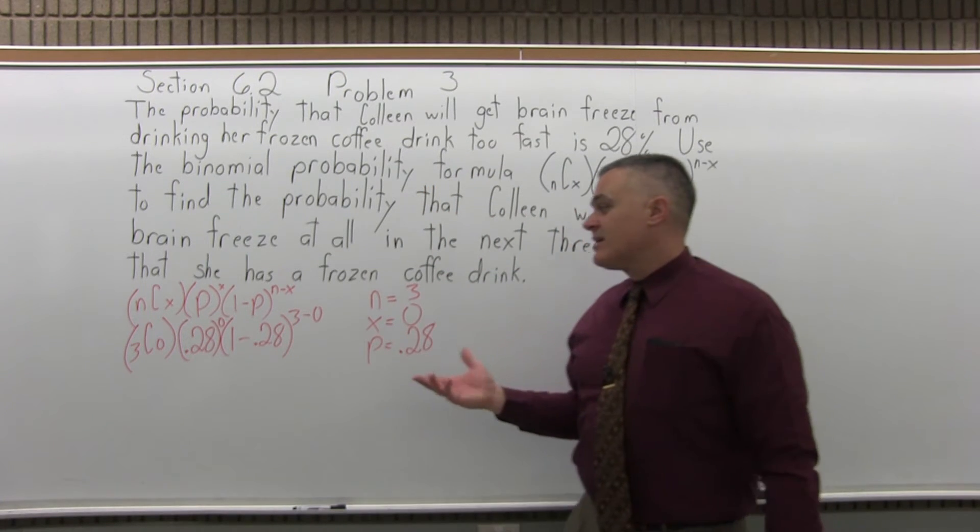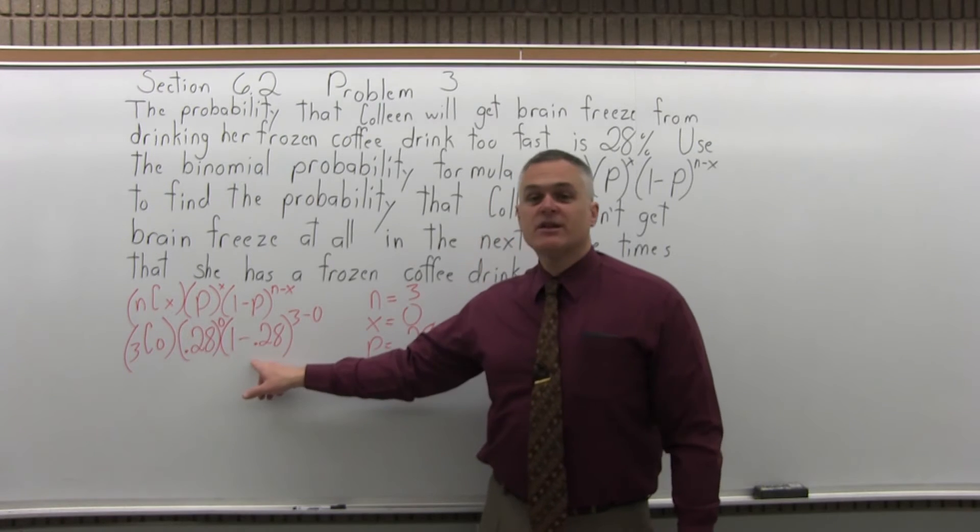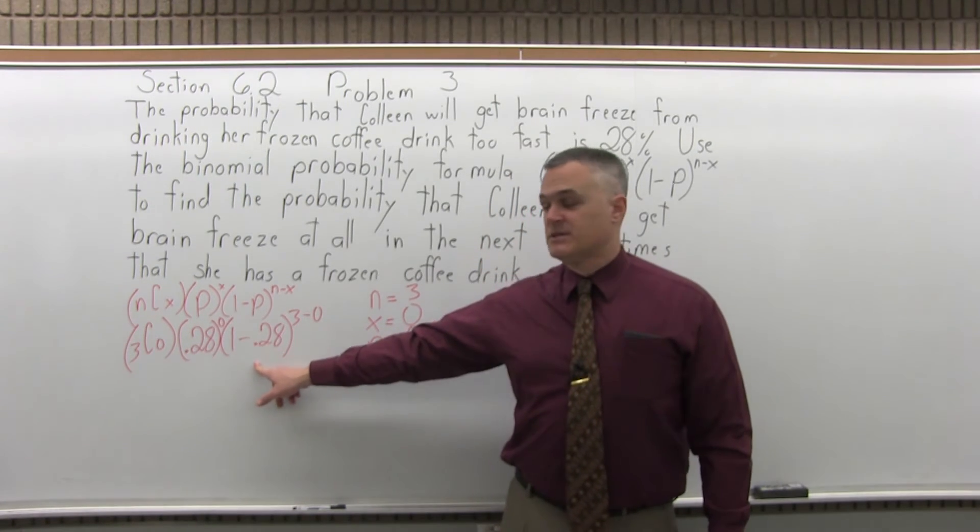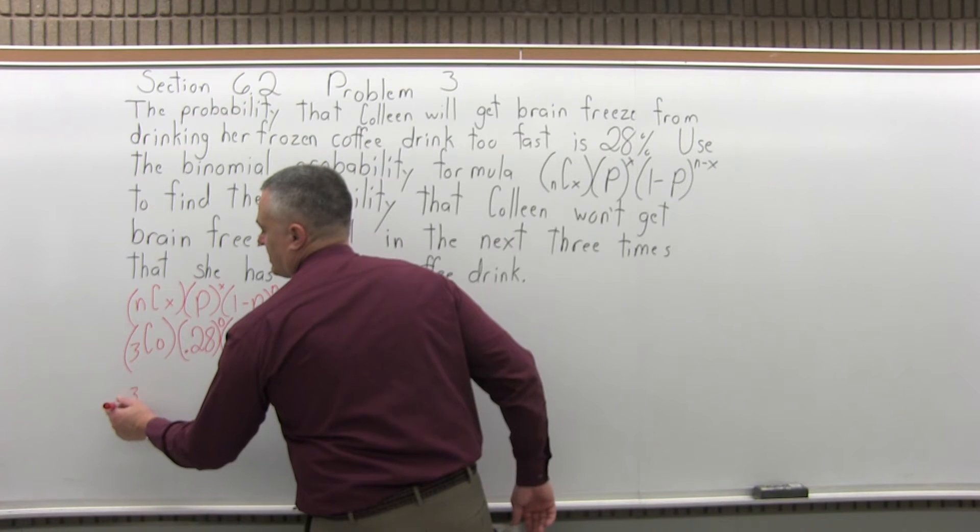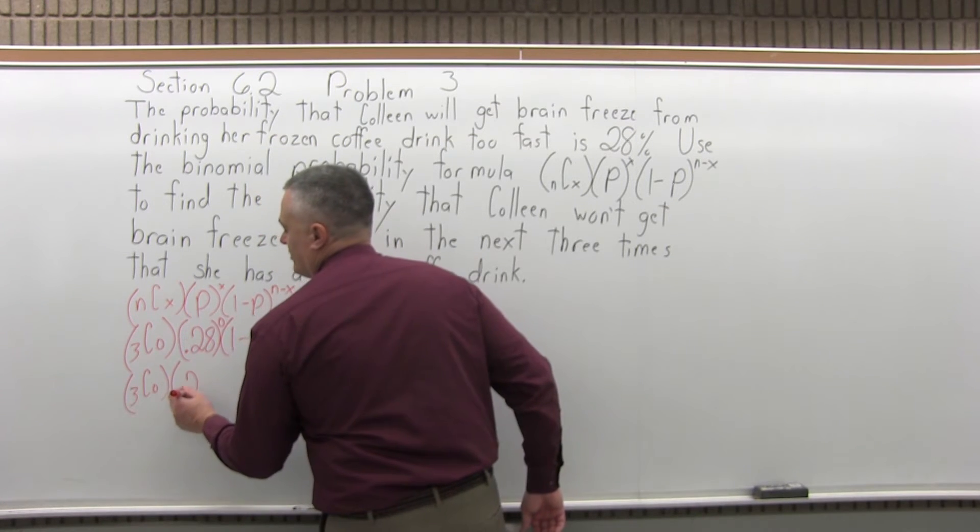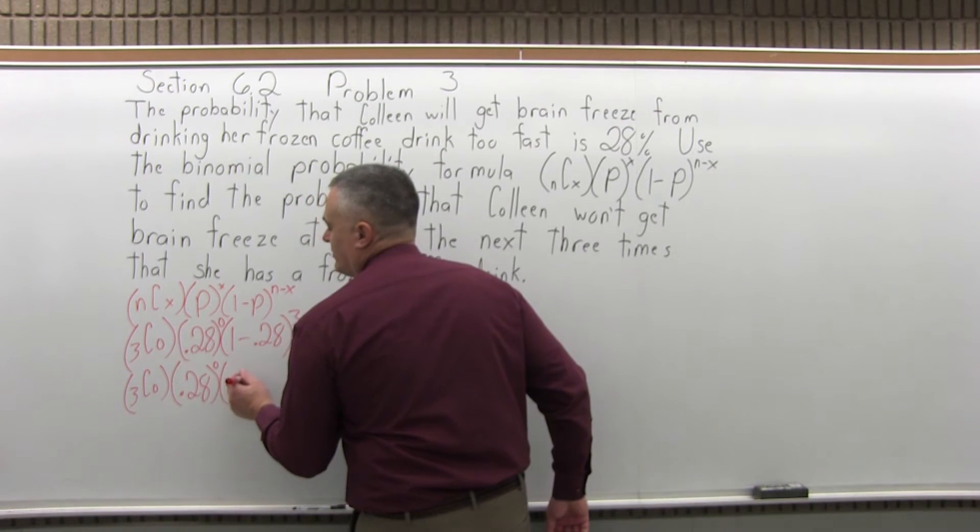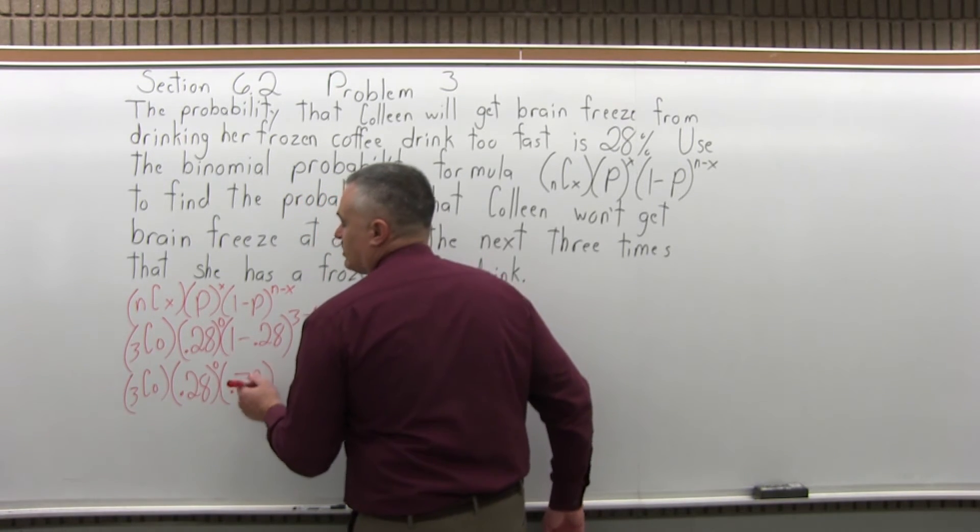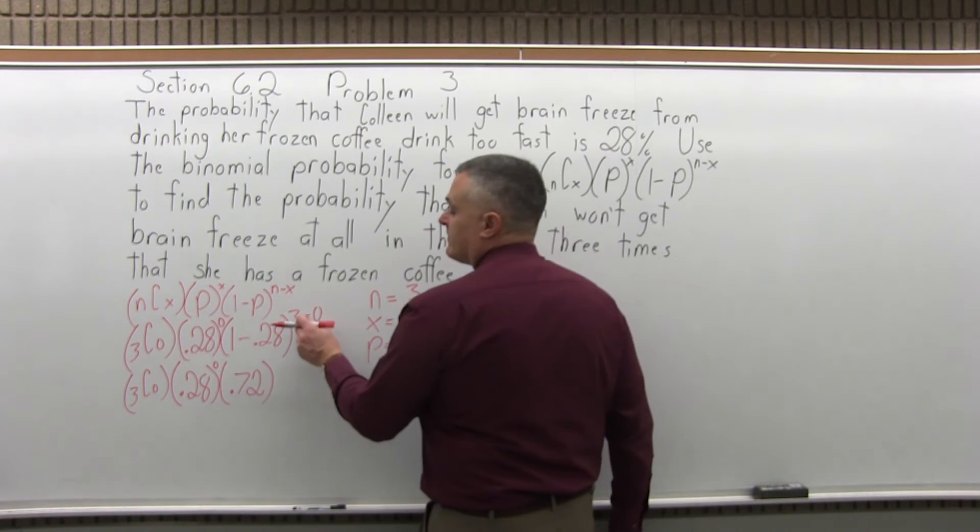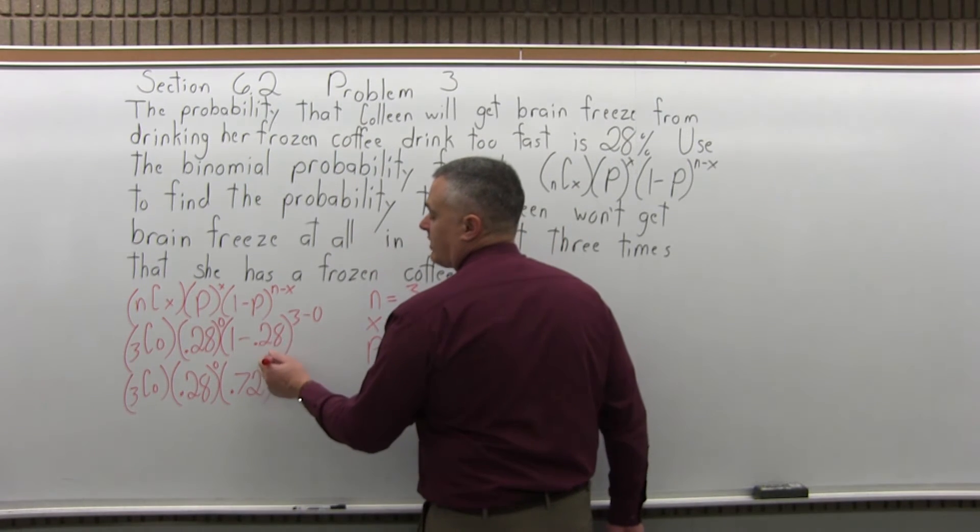Now, before I start any significant computation, I like to just clean up the rightmost parentheses. The first one will stay 3 combination zero for another minute. The middle one will stay .28 to the zero power for a minute. But now 1 minus .28 can be simplified to .72, and the exponent 3 minus zero is 3.